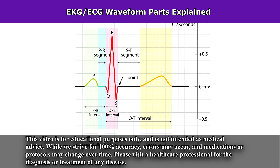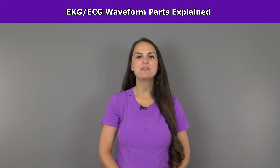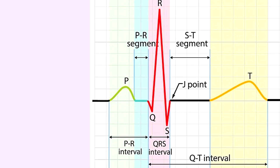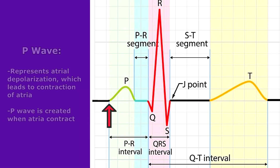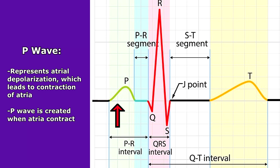Hey everyone, it's Sarah with RegisterNurseRN.com and in this video I want to be reviewing the parts of the ECG waveform. So let's get started. First let's look at the P wave. The P wave represents atrial depolarization, which leads to the contraction of the atria, created by the SA node. Whenever those atria contract, it creates this little wave.